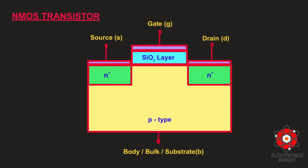Let me give a quick overview of the overall construction of an NMOS transistor. Basically, it is a metal oxide semiconductor device with four terminals: source, gate, drain, and the body, bulk, or substrate terminal. It is fabricated by superimposing layers of conducting and insulating materials. Each MOS transistor consists of a stack of a silicon wafer called the body, bulk, or substrate, an insulating layer of silicon dioxide, and the gate.